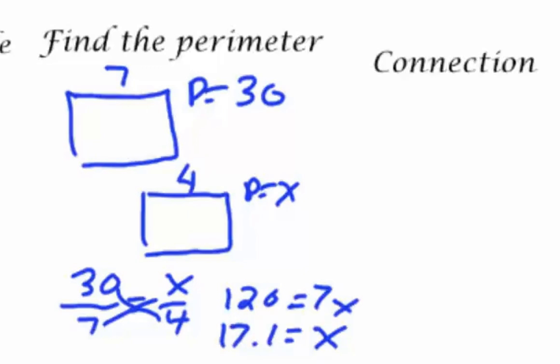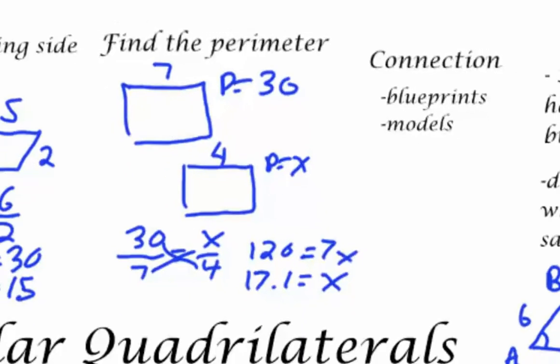The connection with similarity, especially when it comes to quadrilaterals, is very strong, as similarity helps to find blueprints and models in architecture.